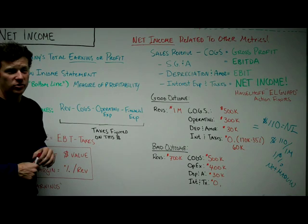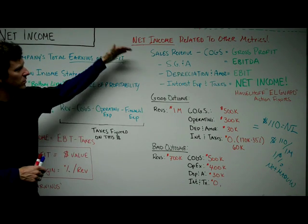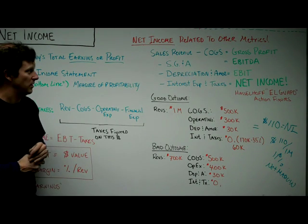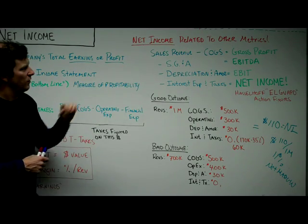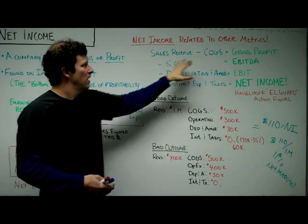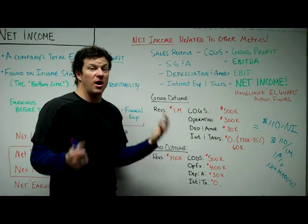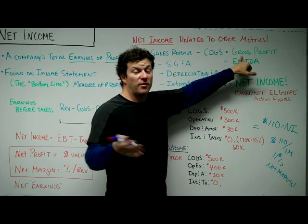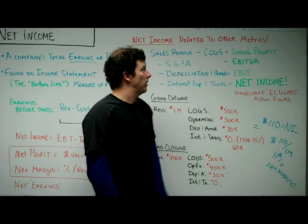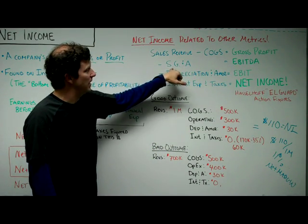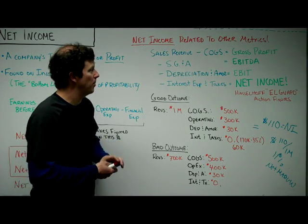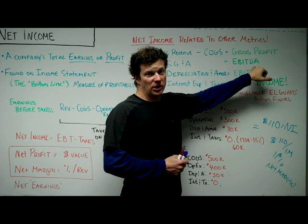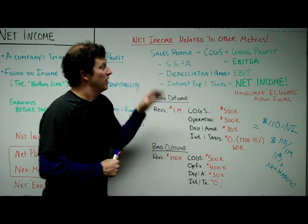Let's talk about how net income relates to other metrics — this is an important group that helps break down exactly what net income is. Starting with sales revenue: if you take sales revenue and subtract cost of goods sold, you get gross profit. If you take gross profit and subtract selling, general, and administration expenses — sometimes called operating expenses — you get EBITDA: earnings before interest, taxes, depreciation, and amortization.